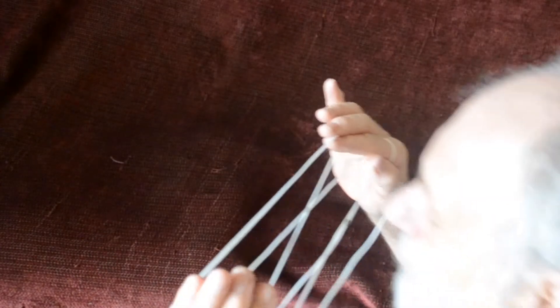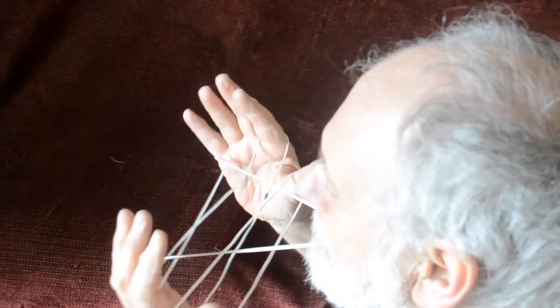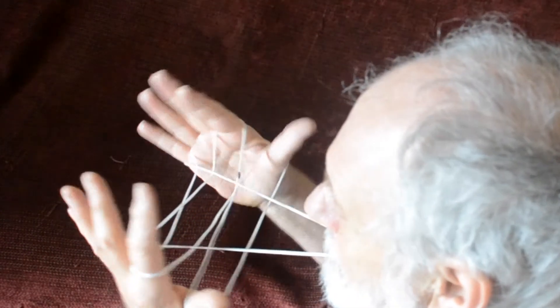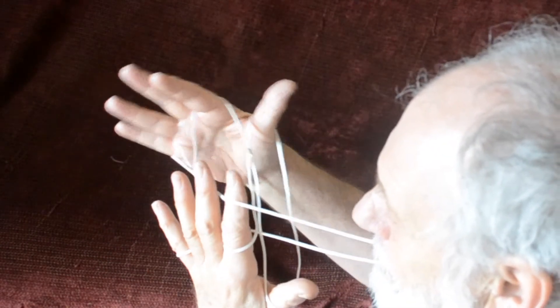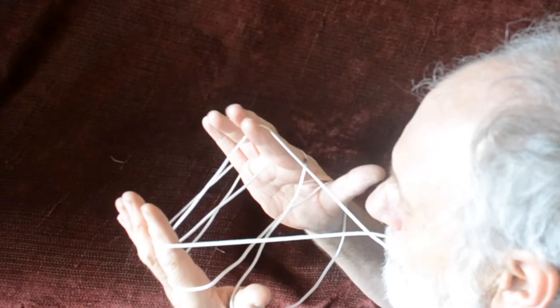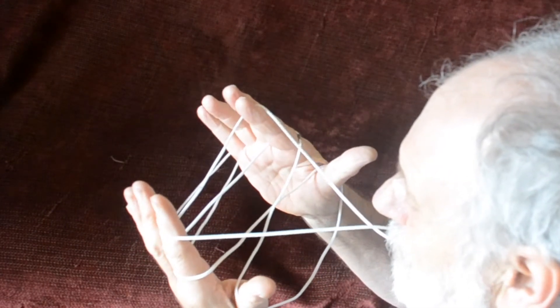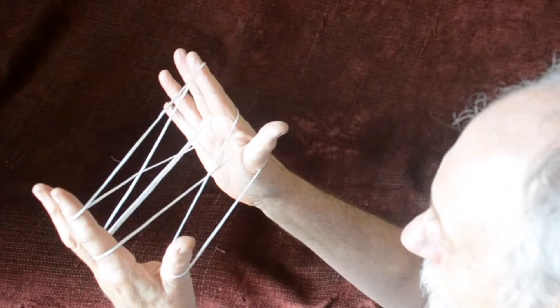Then you pass the left index over that thumb string and under the thumb string running to the other side of the design. And then the right index goes under the other mouth string. Release the mouth loop. So you've now got an upper index string and release the thumbs.